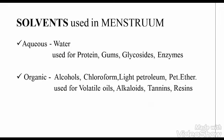During extraction, the solvent used is called menstruum. There are two types: aqueous and organic. In aqueous, water is preferred for proteins, gums, and glycosides — these compounds present in crude drugs use water as the menstruum. For organic solvents, alcohol, chloroform, light petroleum, and pet ether are used.